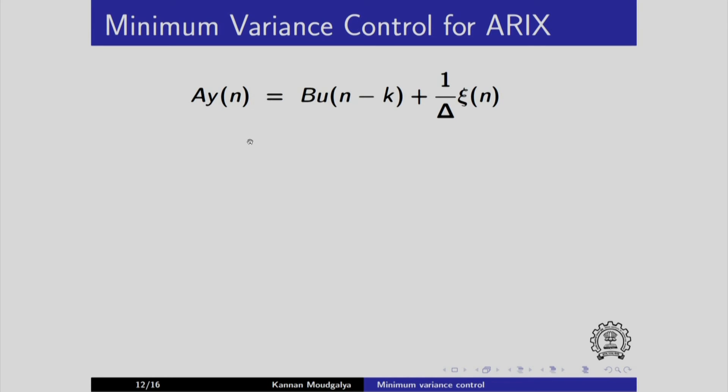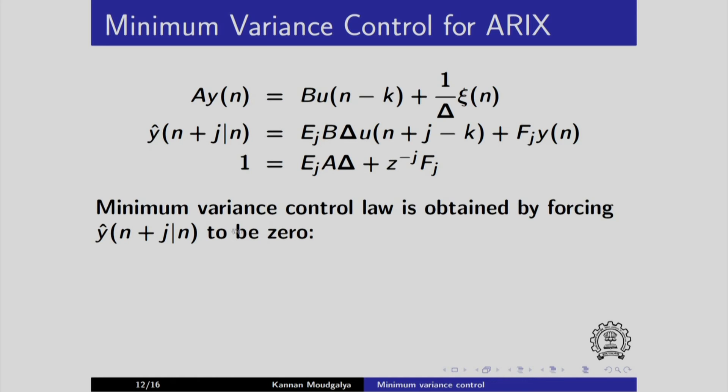Let us see the minimum variance control law. This is the controller Riggs. Remember, there is no moving average part. We have one here. Here is the prediction error model. E and F are obtained like this. Minimum variance control law is obtained by forcing y hat of n plus j given n to be 0 for j equals k. I get this control law or delta un equals this. Remember, in this case, we get delta un. You do not write un. You actually explain delta un with the help of this term.